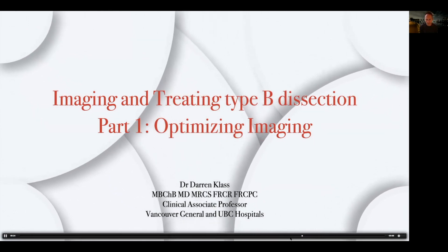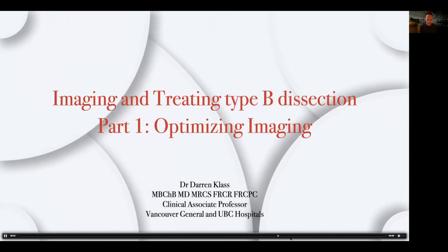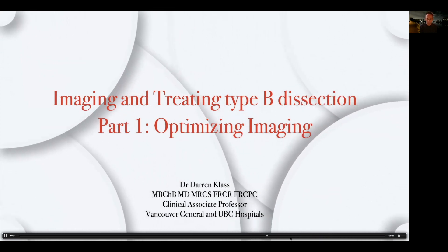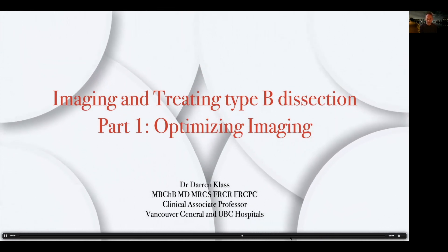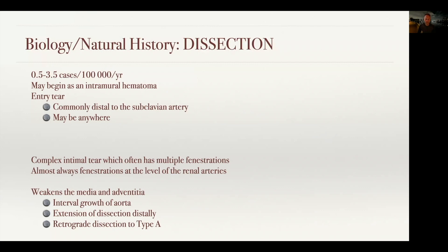I'll also cover timing of imaging with regards to type B dissection. We know dissection is a very low incidence but very high complication rate disease. It can begin as an intramural hematoma. The entry tear is often around the left subclavian artery, but can be anywhere. It can begin as a complex intimal tear distal to the left subclavian artery, but it'll often have multiple fenestrations along its length.